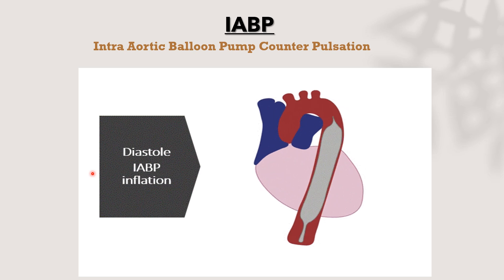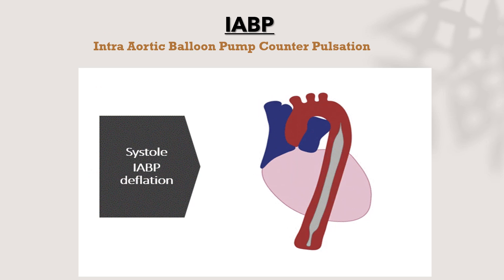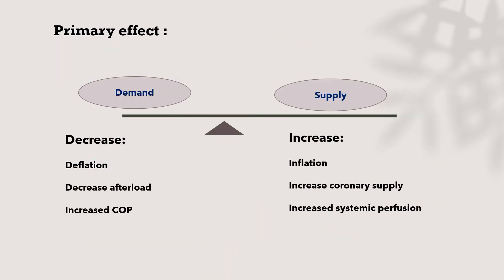During systole, rapid deflation decreases aortic end-diastolic pressure, which helps decrease afterload and increase cardiac output. The primary effect of the balloon is decreasing oxygen demand and increasing oxygen supply. Demand is decreased by deflation, which decreases afterload by reducing aortic end-diastolic pressure, and this is reflected in stroke volume and cardiac output.